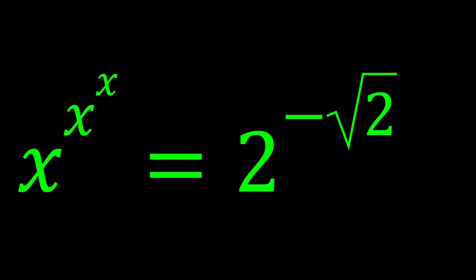You've probably seen problems where we have x to the power x on the left hand side and we use Lambert's W function sometimes to solve those problems or different methods. You can log both sides, so on and so forth, but what about when you have this, x to the power x to the power x?